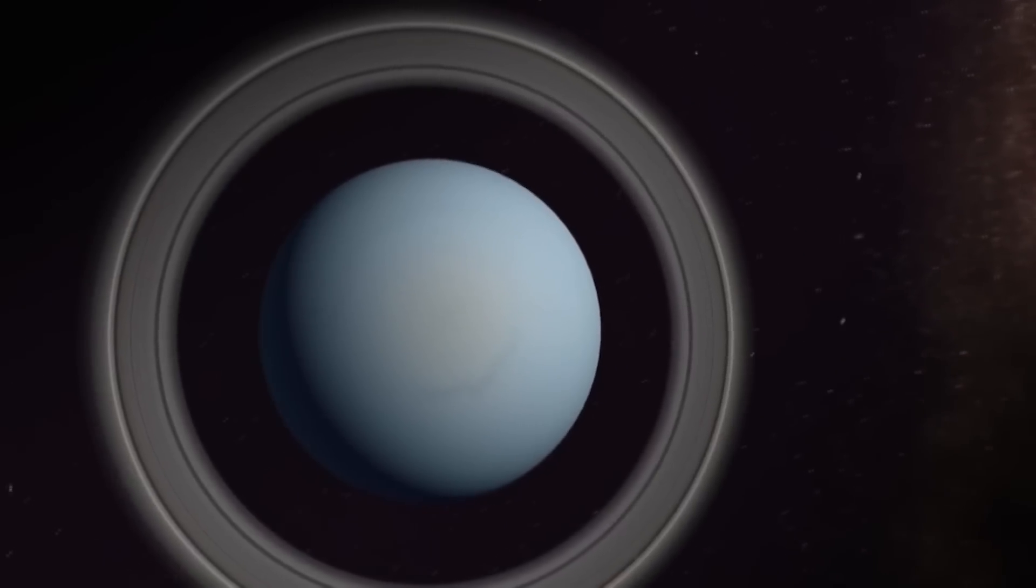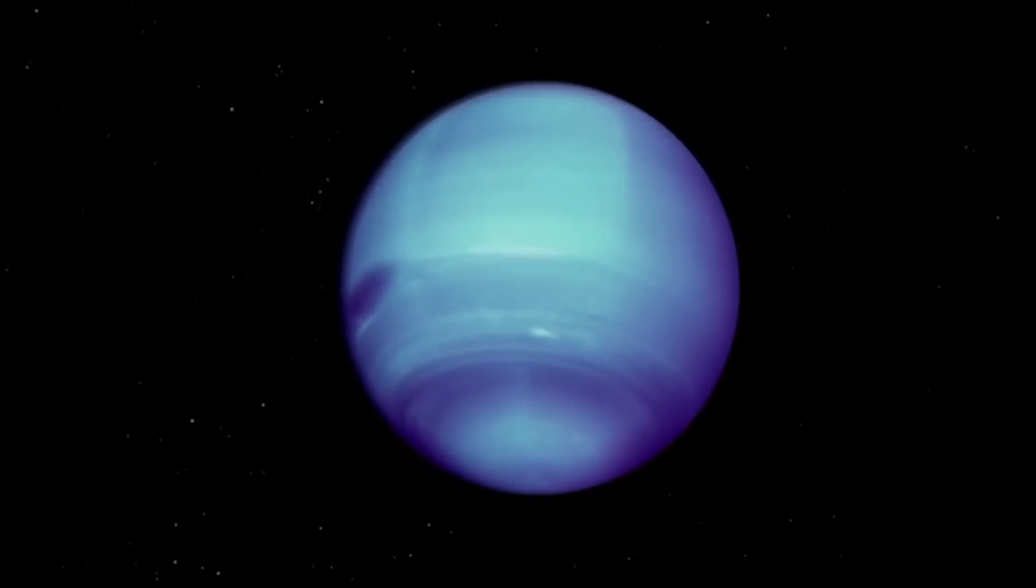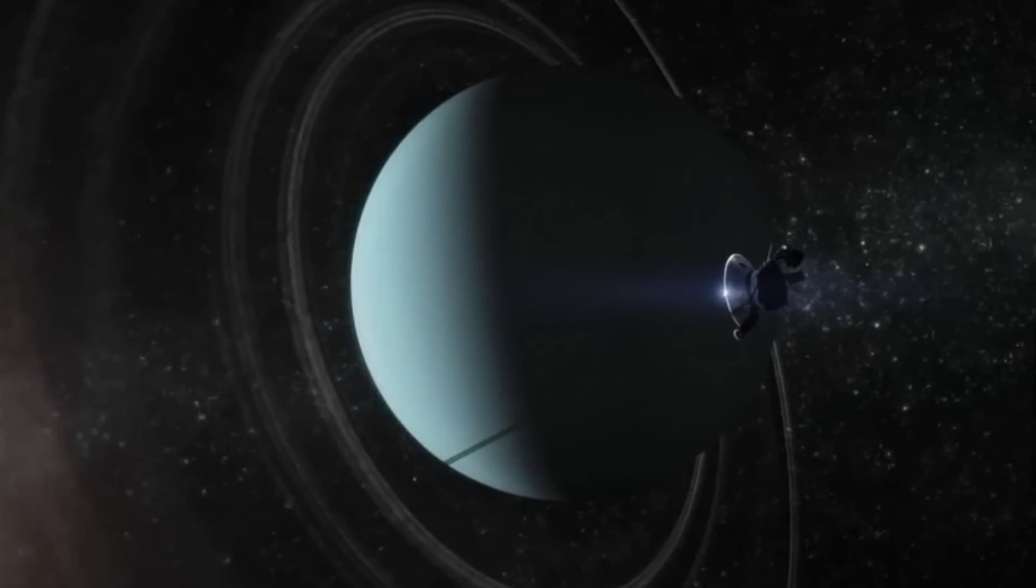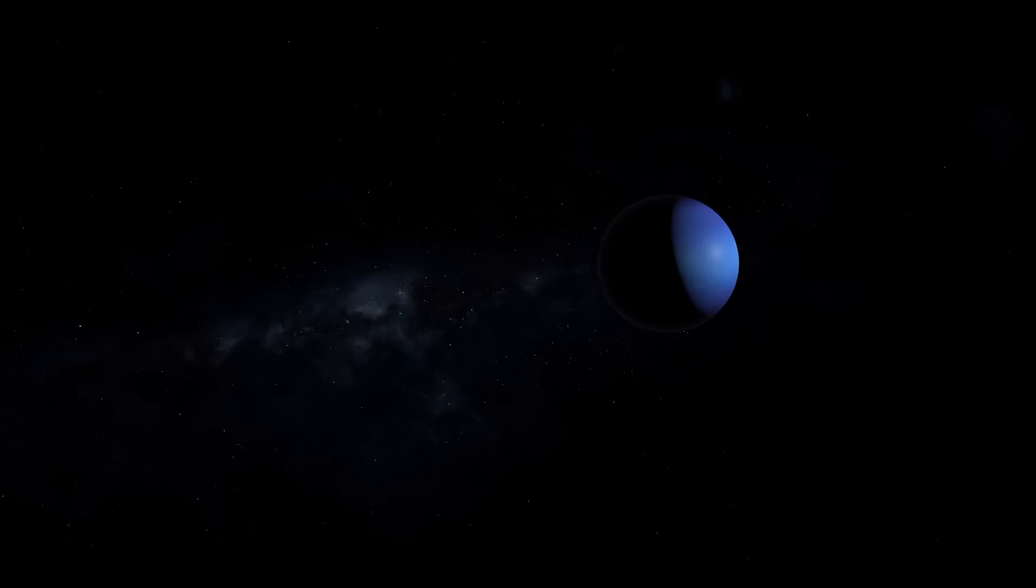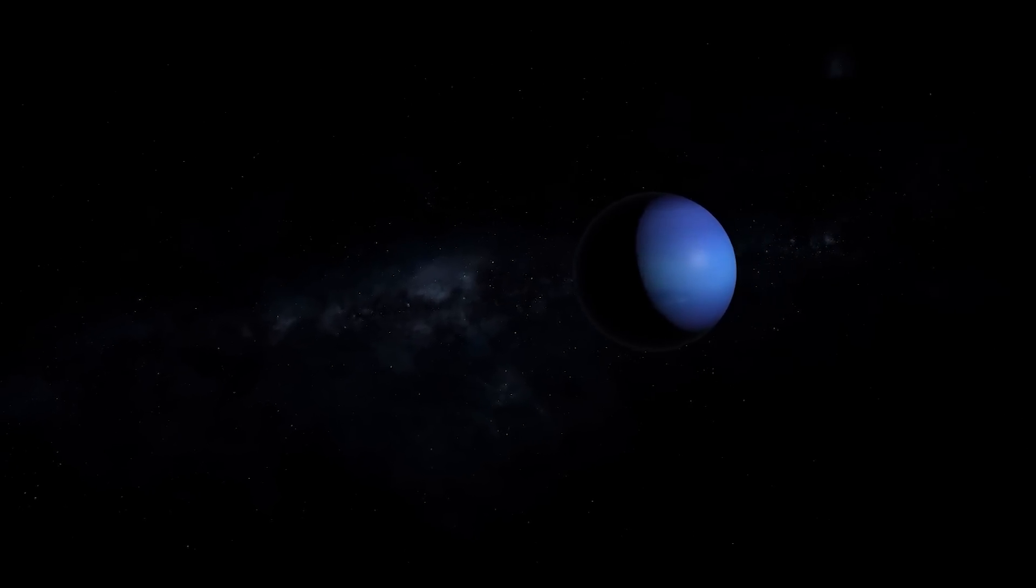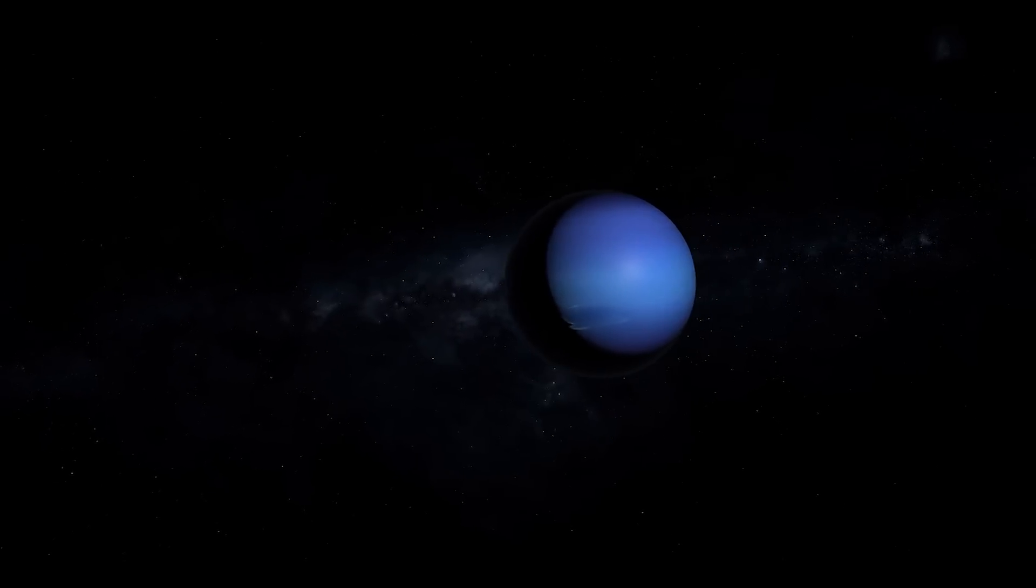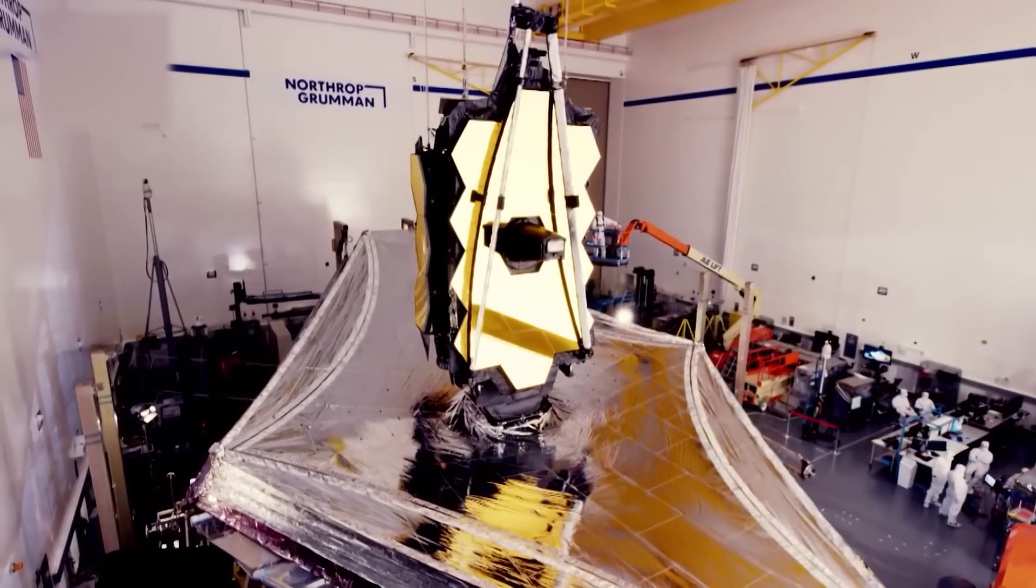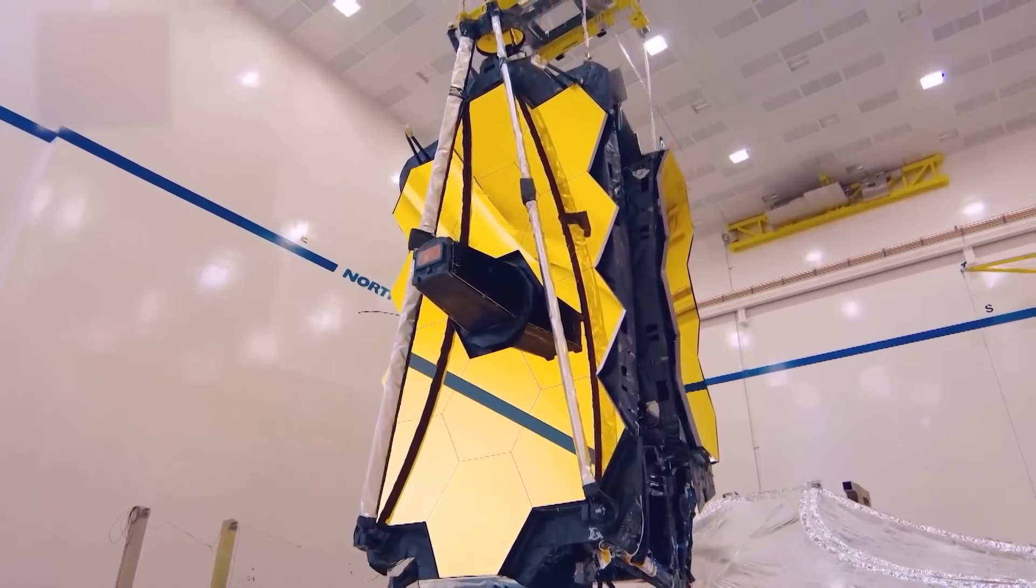The planet displays a blue hue in the resulting representative color image. When Voyager 2 looked at Uranus, its camera showed an almost featureless blue-green ball in visible wavelengths. With the infrared wavelengths and extra sensitivity of Webb, we see more detail.